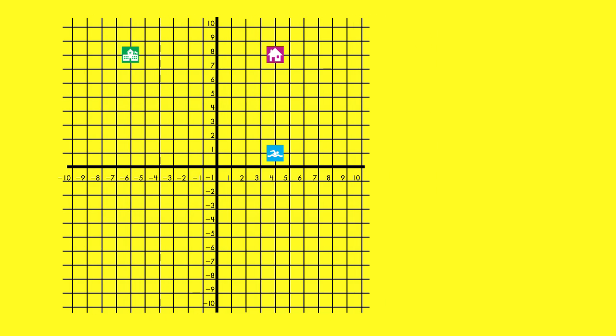On this grid, we can see that home is located at (4, 8), the school is located at (-6, 8), and the pool is located at (4, 1). We can use these coordinates to help us find the distances between the locations.